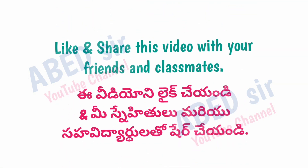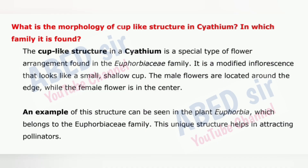Next important question: What is the morphology of the cup-like structure in cyathium? In which family is it found? The cup-like structure in a cyathium is a special type of flower arrangement found in the Euphorbiaceae family. It is a modified inflorescence that looks like a small, shallow cup. The male flowers are located around the edge, while the female flower is in the center. An example is the plant Euphorbia. This unique structure helps in attracting pollinators.